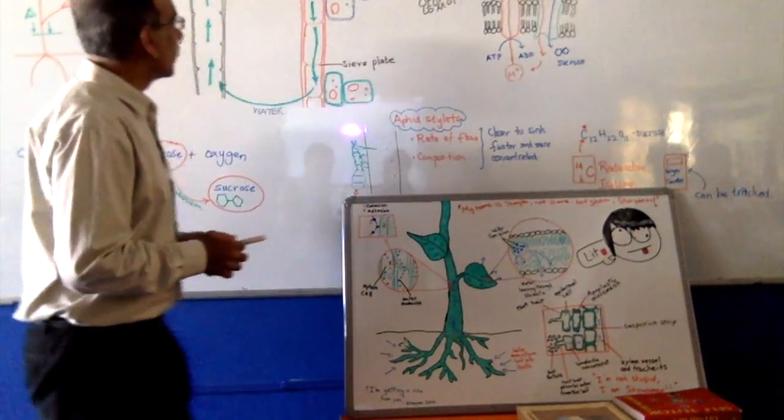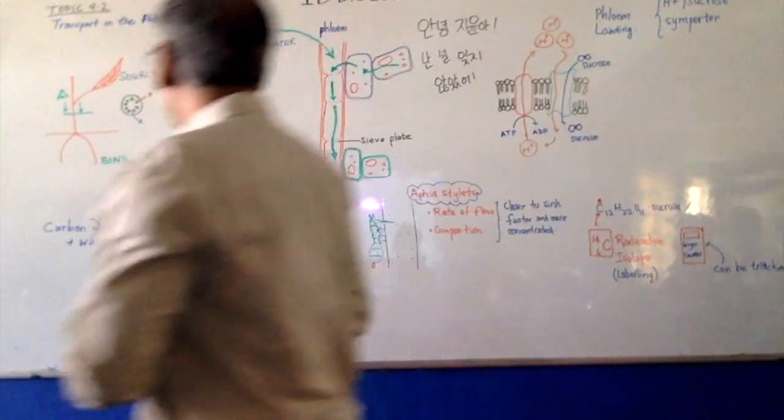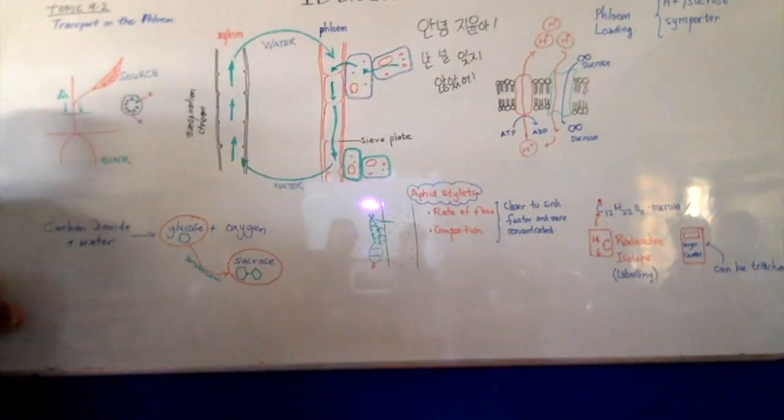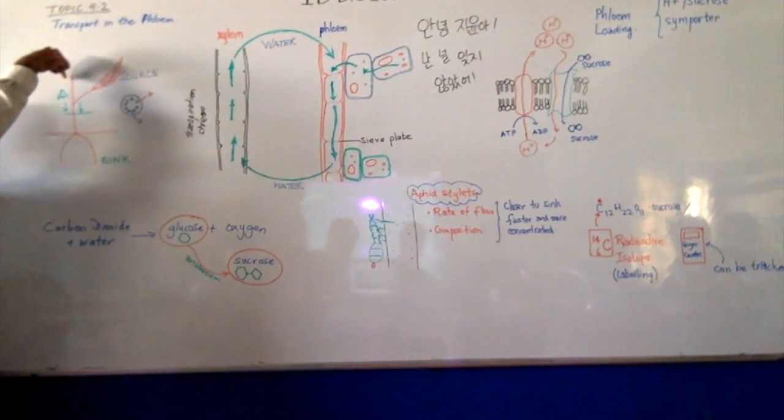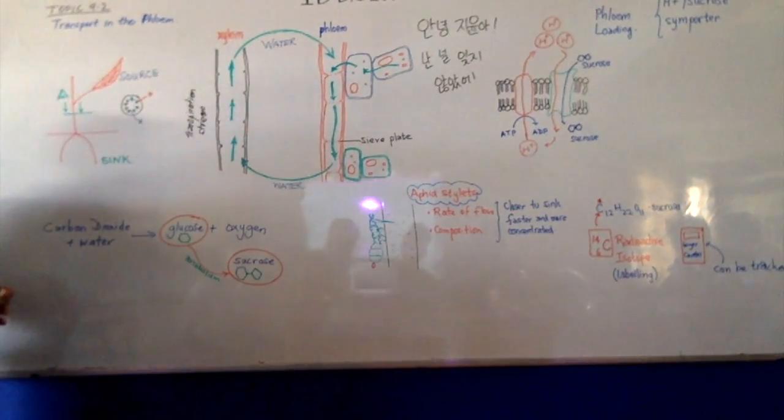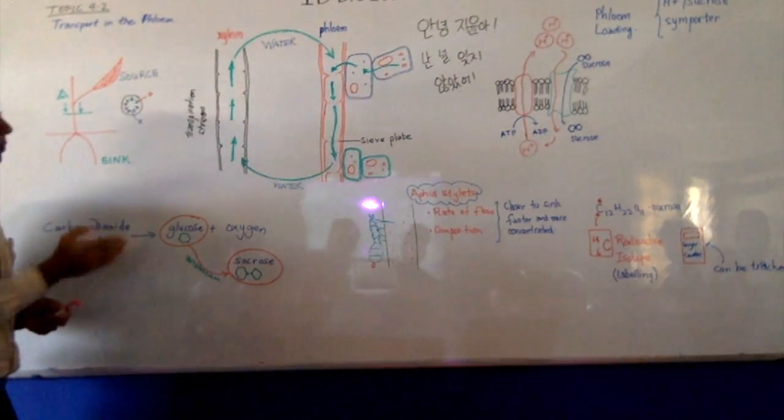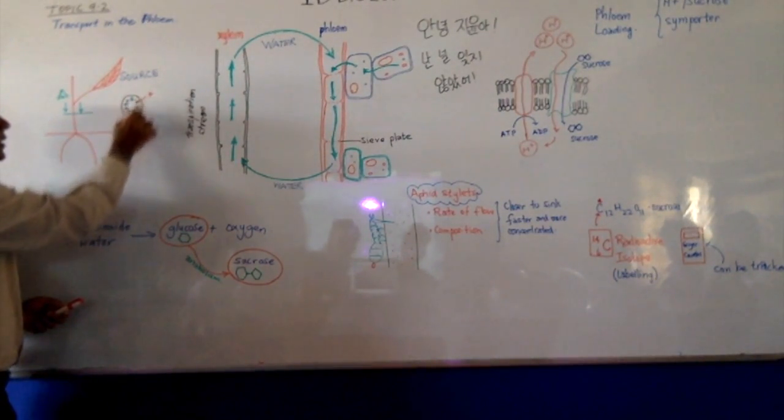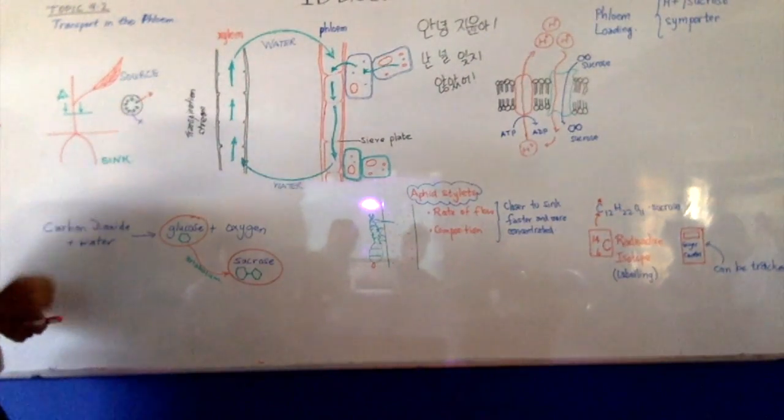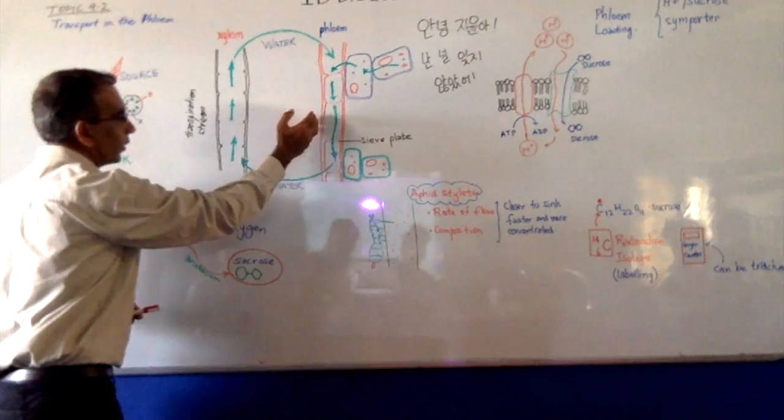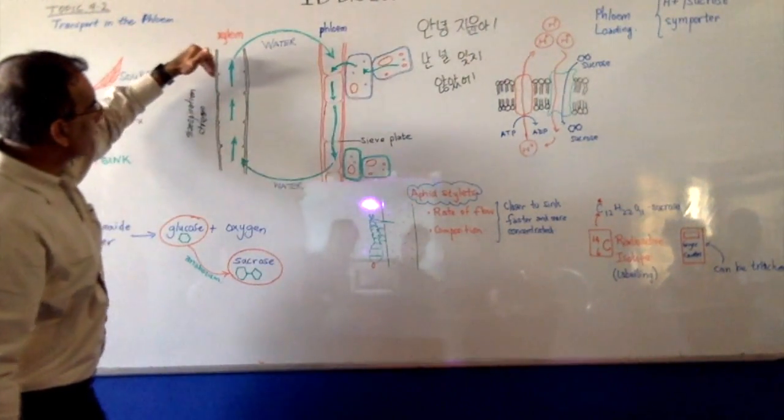Today we are moving on to look at transporting the phloem. If we were to make a transverse section, cut down across the root and look into it, you would see that for a dicot plant or a typical flowering plant, the phloem is on the outside and the xylem is on the inside. There is just a thin layer of cells that separates the phloem and the xylem.